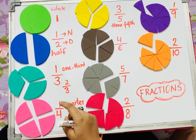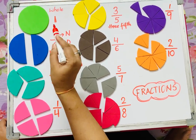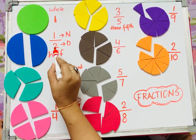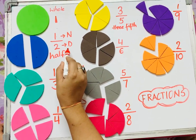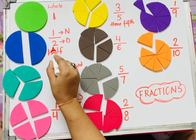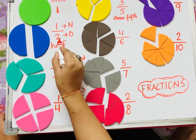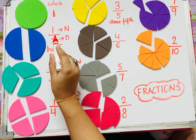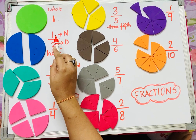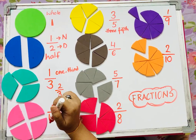This fraction can also be written as 1 by 2, where the top number is called the numerator and the number at the bottom is called the denominator. The denominator tells us how many equal parts there are in a whole, and the numerator tells us how many of these equal parts are used or counted.